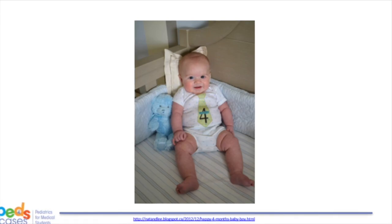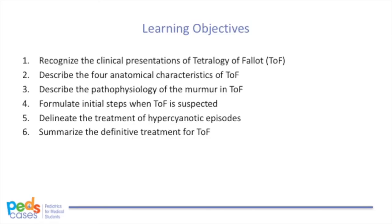Thank you for listening to the podcast. I hope you now have a better understanding of Tetralogy of Fallot. You should be able to: 1. Recognize the clinical presentations of Tetralogy of Fallot. 2. Describe the four anatomical characteristics of Tetralogy of Fallot. 3. Describe the pathophysiology of the murmur in Tetralogy of Fallot. 4. Formulate initial steps when Tetralogy of Fallot is suspected. 5. Delineate the treatment of hypercyanotic episodes. 6. Summarize the definitive treatment for Tetralogy of Fallot. Check out the companion case about Tetralogy of Fallot on pebscases.com, where you can test your knowledge by working through the case and answering practice questions.